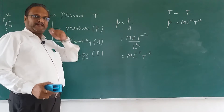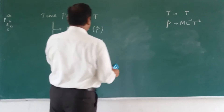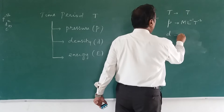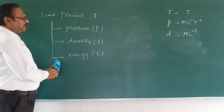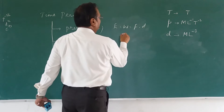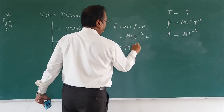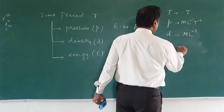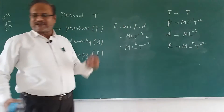Density is mass upon volume, so its dimensional formula is M L power minus 3. Energy equals work done, which equals force into displacement: M L T power minus 2 into L, giving M L power 2 T power minus 2. So energy has dimensional formula M L power 2 T power minus 2.